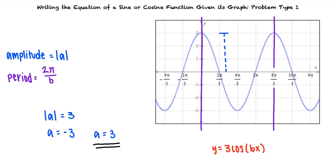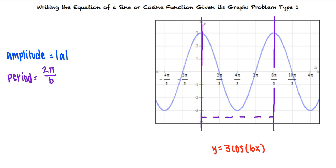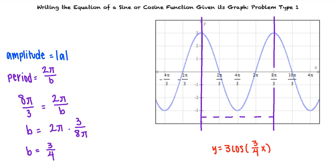Now, in order to find the value of b, we must look at the period. The period of the function is the length of an interval in which the graph completes exactly one cycle. For our function, this interval is from 0 to 8 pi-thirds, which tells us that the period is 8 pi-thirds. With this equation, we can now solve for b. Now that we know both our a and b values, we see that the equation that describes the graph is y equals 3 cosine of 3-fourths x.